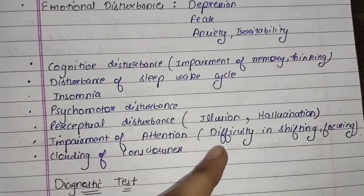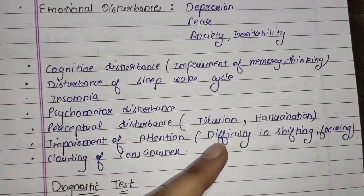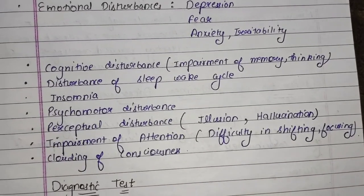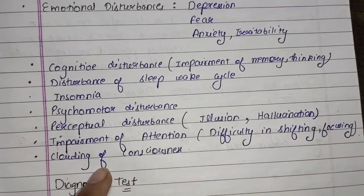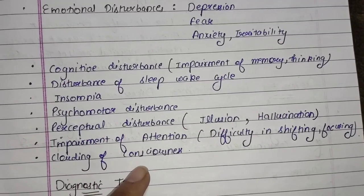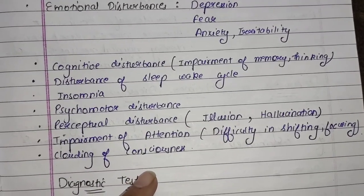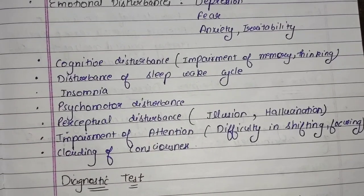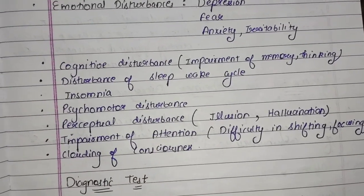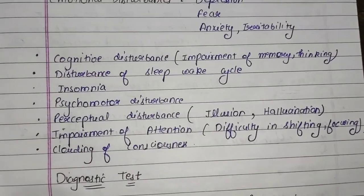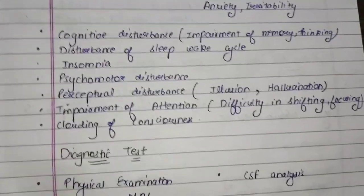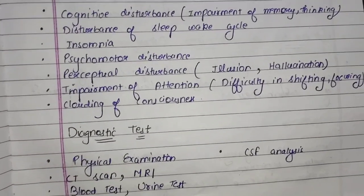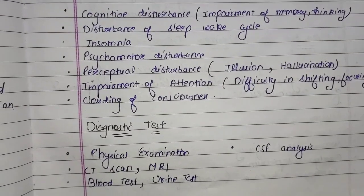Signs and symptoms include difficulty shifting focus or concentrating on things, and clouding of consciousness — the person's consciousness becomes impaired and the person mainly becomes unconscious. That's all about signs and symptoms.